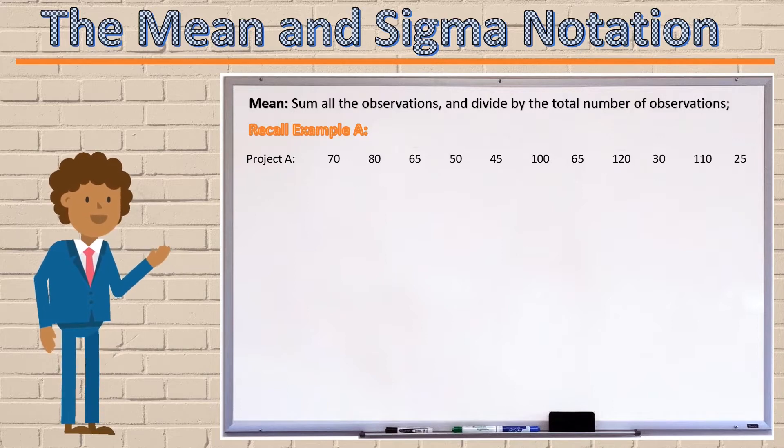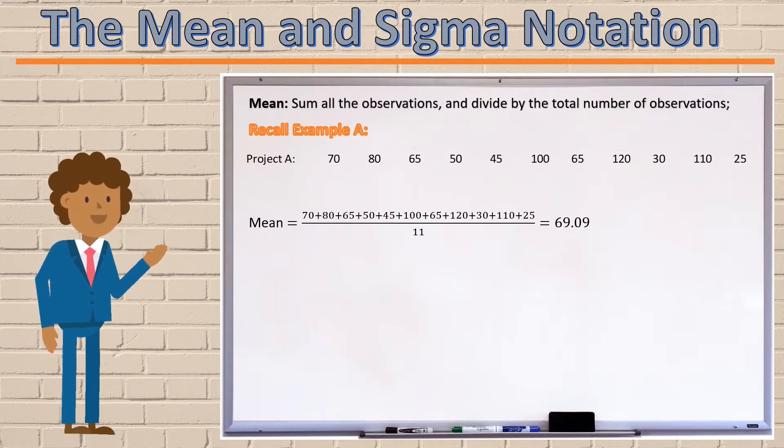If we wanted to calculate the mean, we would just have to add up all of the observations and divide the result by the total number of observations. So in other words, the mean would be found by calculating 70 plus 80 plus 65 plus 50 all the way up to the last observation,